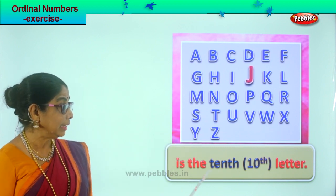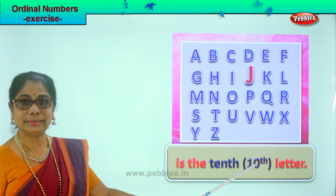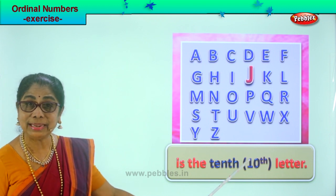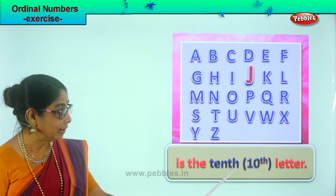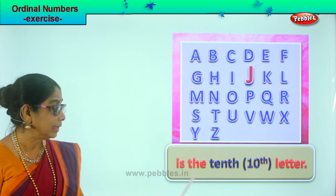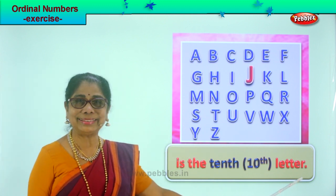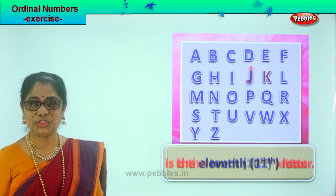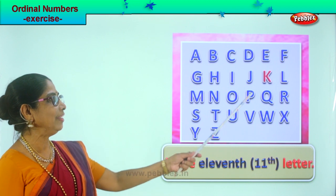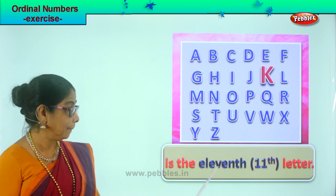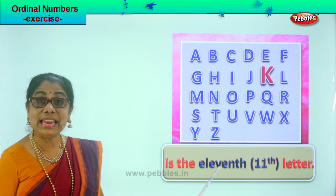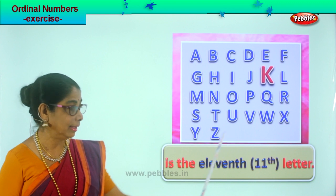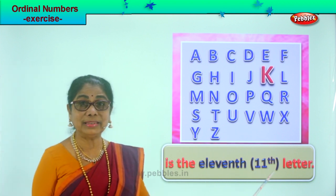J is the tenth letter. How do you represent ten? Write number ten and TH to the side — tenth. J is the tenth letter. After J comes K. K is the eleventh letter. Write eleven and TH at the side. K is the eleventh letter.